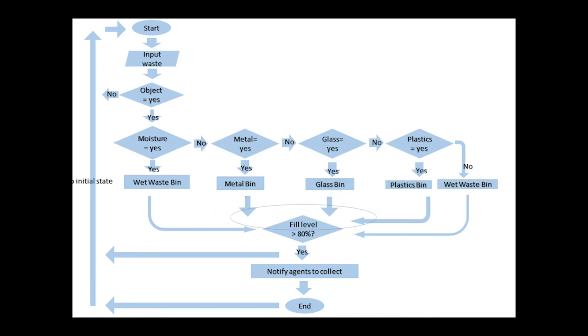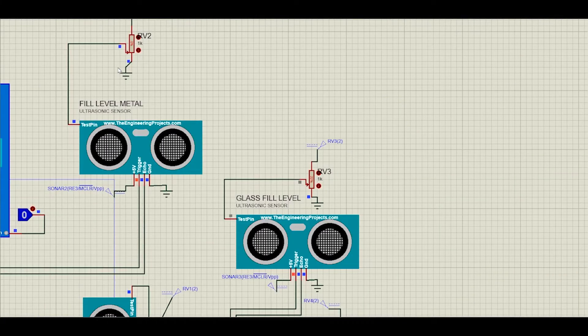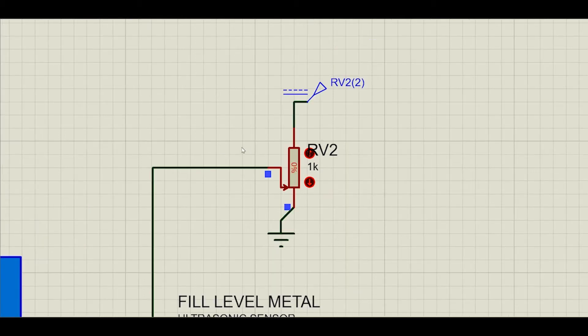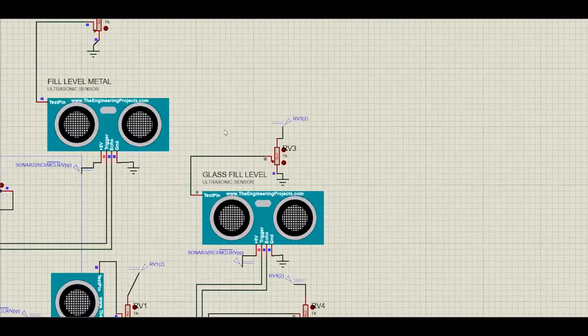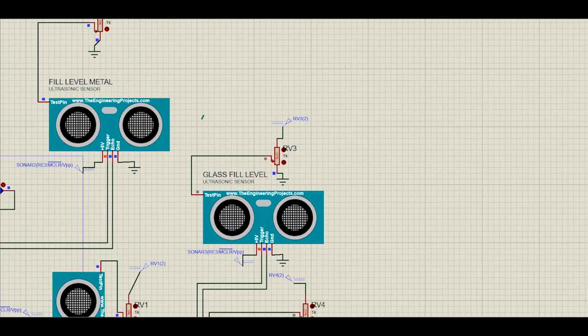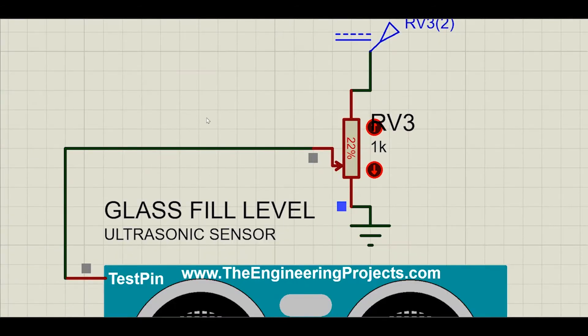All the bins are monitored by the ultrasonic sensor to check its fill level from time to time. When it's over 80% it will trigger the SMS to alert garbage collector or the recycling agents to collect. This is a simulation done using Proteus software. Before we look into the simulation's result, we first set the fill level conditions inside each bin. Ultrasonic sensor is used to monitor the fill level of the dustbin.